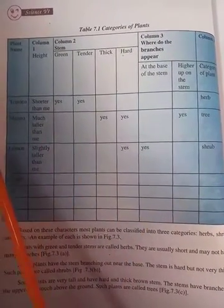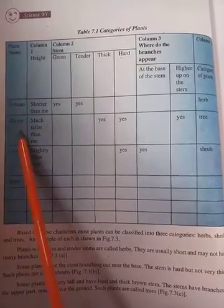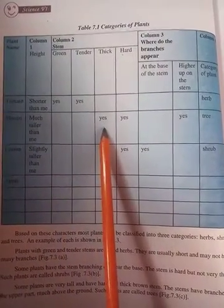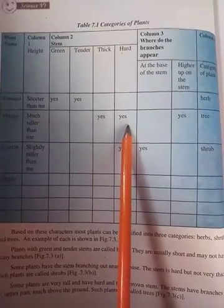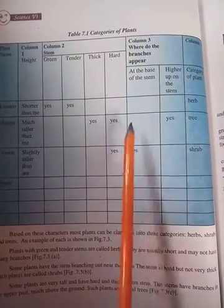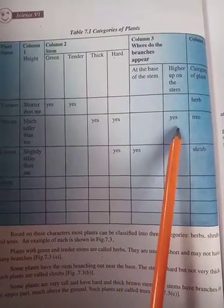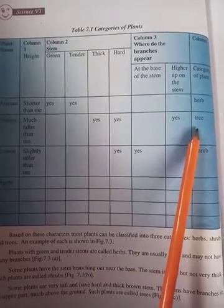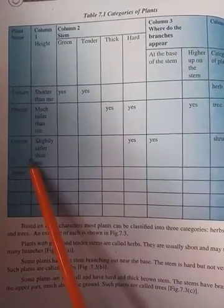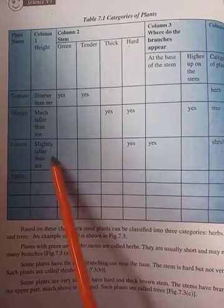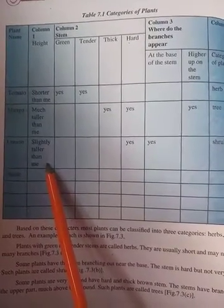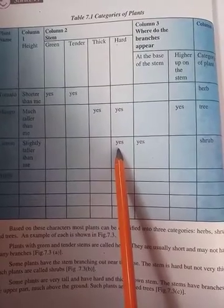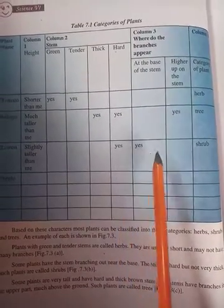Mango is a big tree — its stem is thick and hard, and its branches are above the stem, so it is categorized as a tree. Similarly, the lemon plant is shorter than a human being and its stem is very hard.